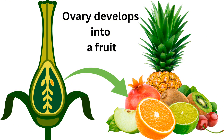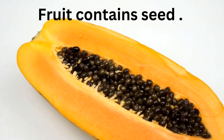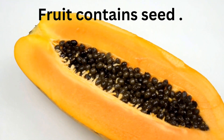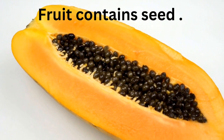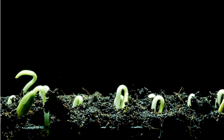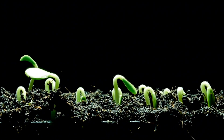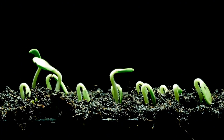A fruit contains seeds inside it. Do you know which part develops into a seed? The ovule develops into a seed and helps in sexual reproduction in flowering plants.